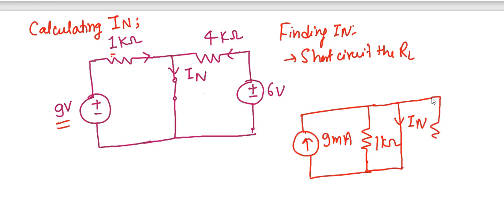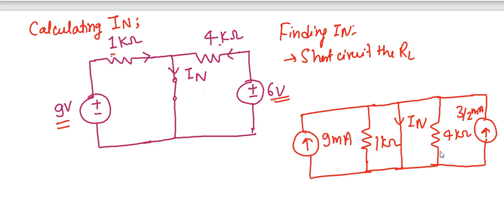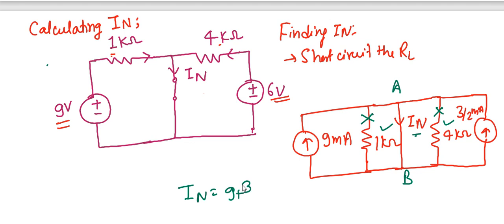The 4 kilohm will be in parallel, and the current equivalent of the 6 volt source with 4 kilohm resistance will be 6 divided by 4, that is 3/2 milliampere. Now we have two resistances in parallel with one shorted line. In this case, those paths will not receive any current. The total value of current across the IN part, across AB, is IN equals 9 plus 3/2, which gives 10.5 milliampere.